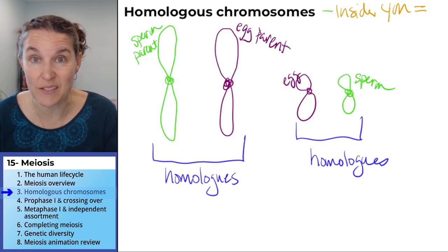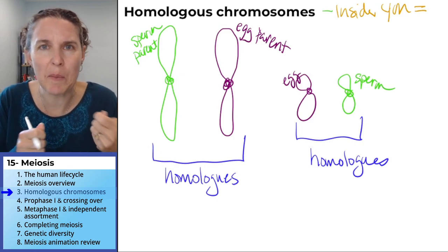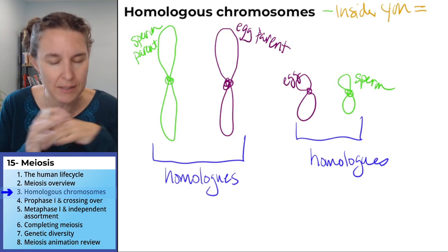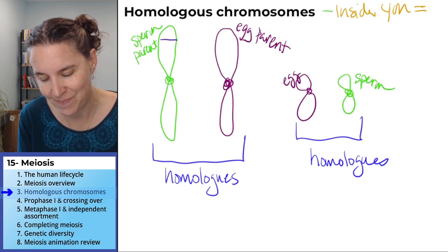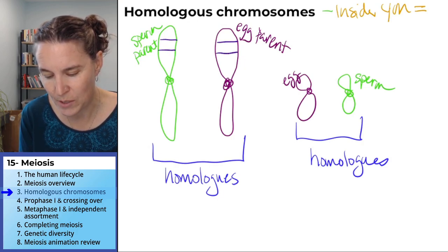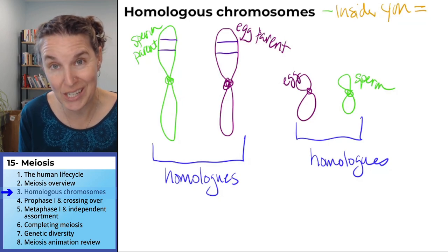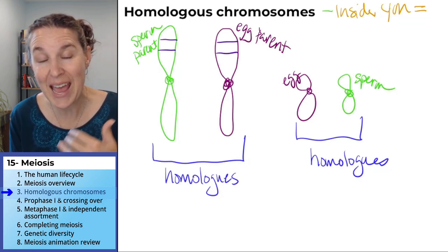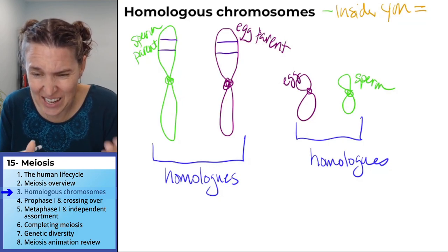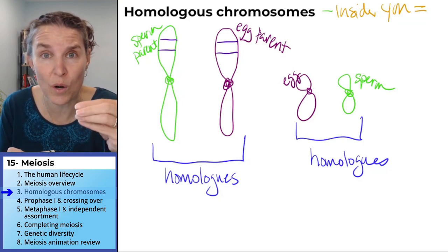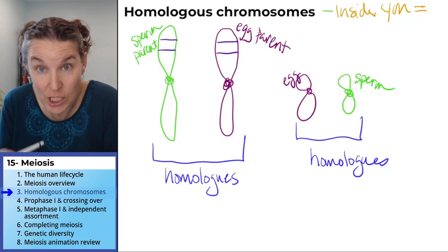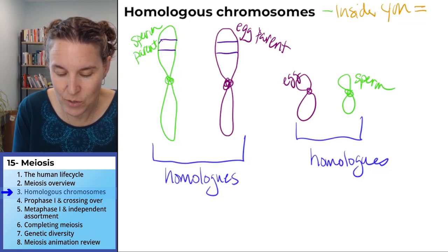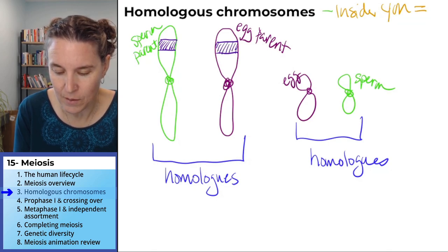Chromosomes are strings of DNA. We wind them up around histone proteins to get these little logs. What we haven't talked about yet is that each of these chromosomes has genes on them. A strand of DNA that codes for a protein that does a thing is a gene. I'm illustrating genes for you in purple.